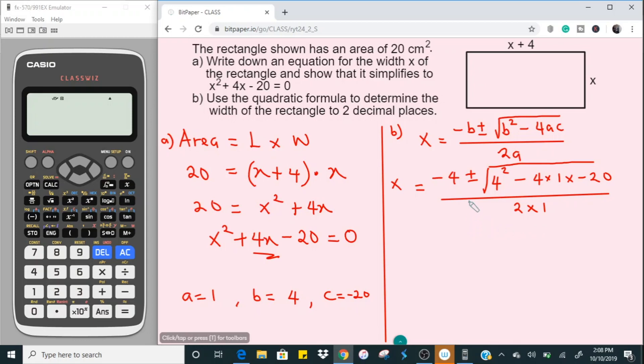So we got to use the calculator to really solve this. Alright, let's solve everything within the square root sign here. Now this is called the discriminant and we need to really work that out. So it's going to be 4 squared minus 4 times 1 times minus 20, and if you hit that, it's going to be 96, so definitely I'm going to get 96.